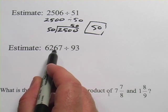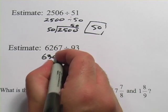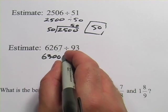In this case, I'm going to round up. I've got 67 here, so I'm going to round up to 6,300. And this 93, I'm going to round that down to 90.